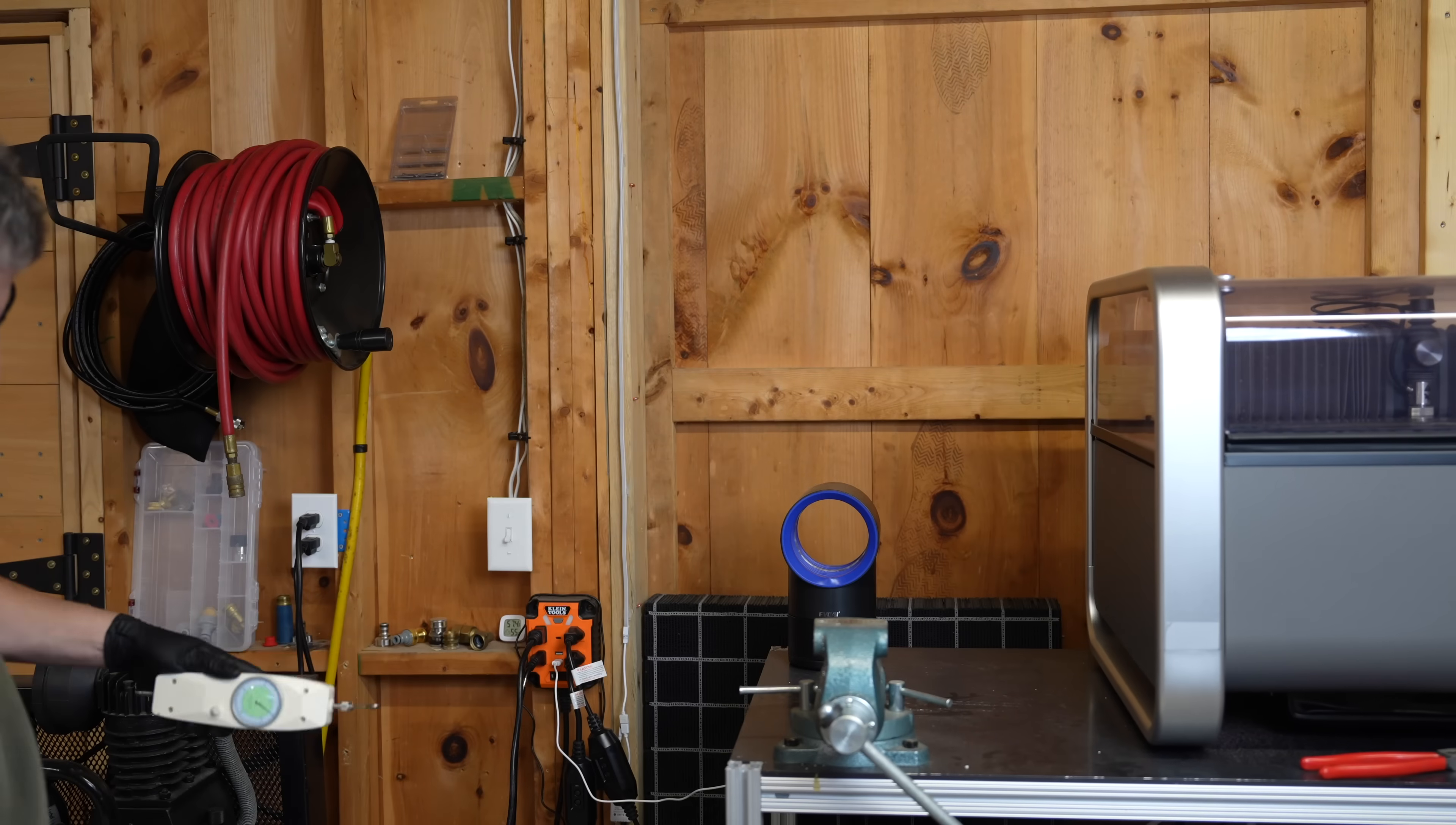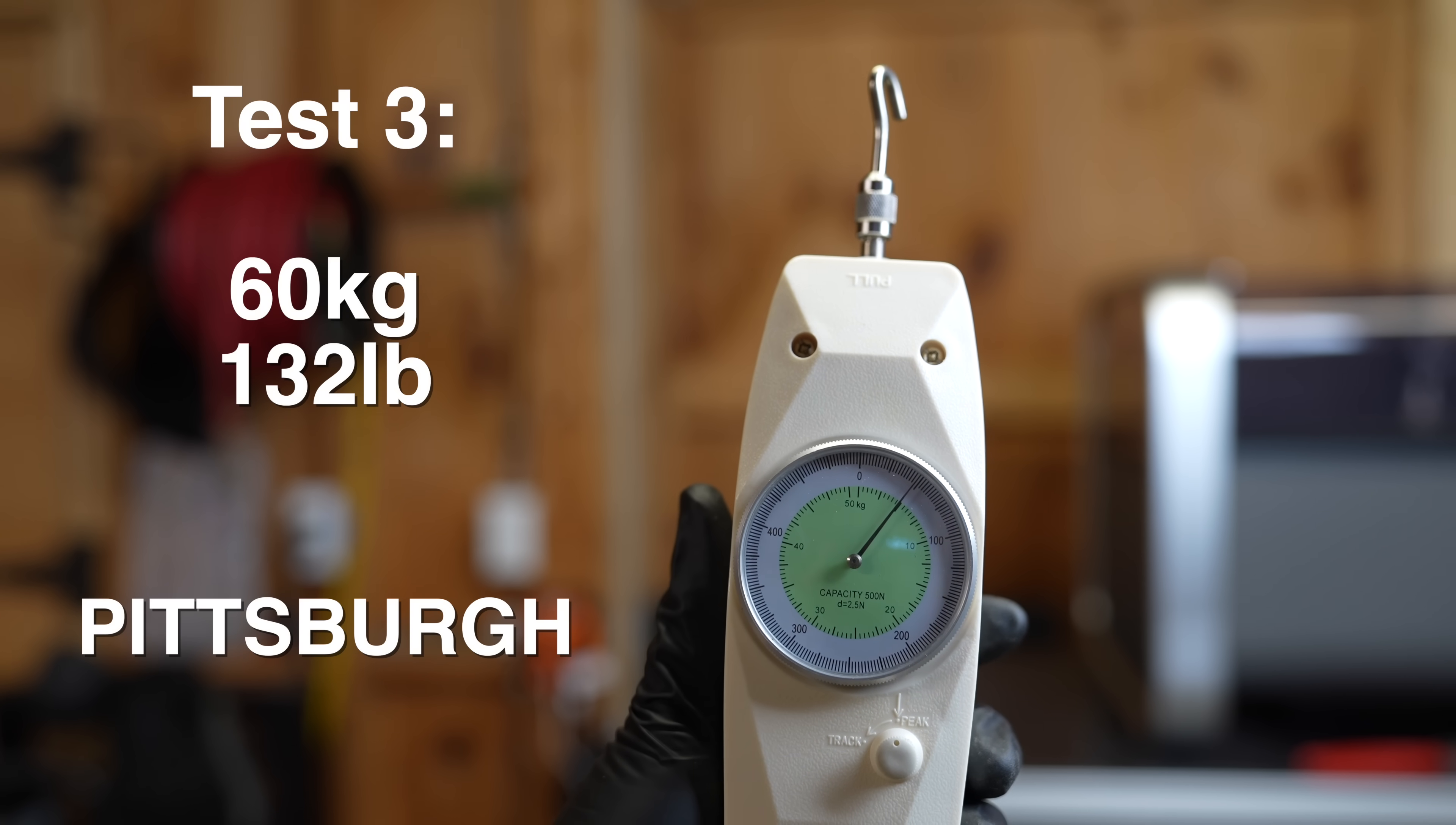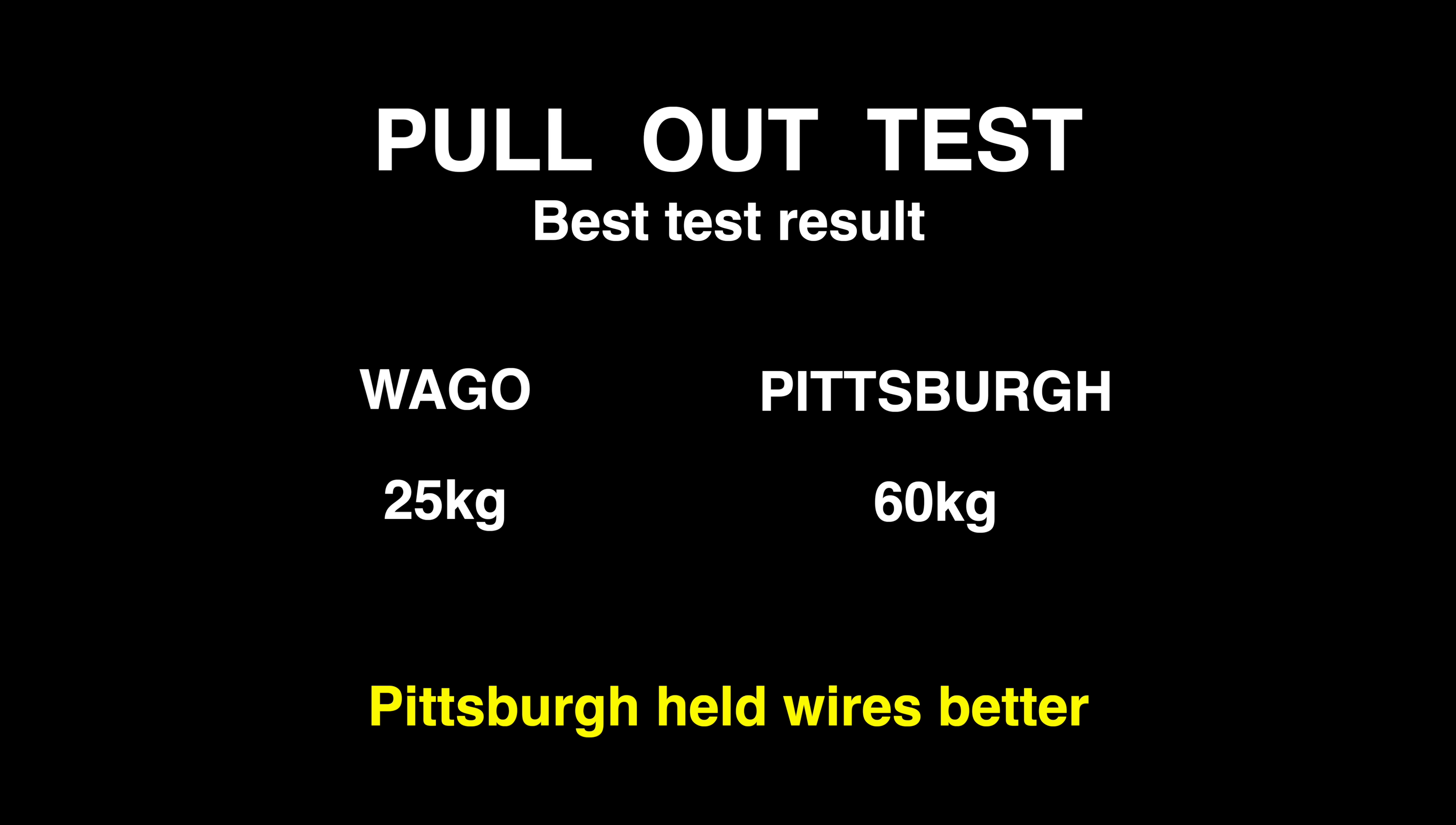This was so unusual I decided to conduct a third test on the Pittsburgh, and it actually got an even better result at 60 kilograms of breaking force or 132 pounds. Taking the best result of each brand, the Pittsburgh achieved over twice the pull out strength required to remove the wire from the connector forcefully.